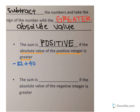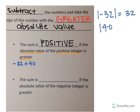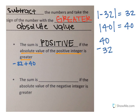I'm going to do my work over here in the side with the white space. The absolute value of negative 32 is 32 because it is 32 units away from zero. The absolute value of 40 is 40 because it is 40 units away from zero. So to solve this problem, I'm going to subtract 40 minus 32, and that gives me 8.